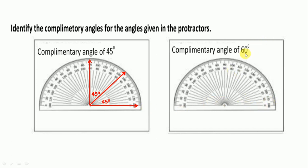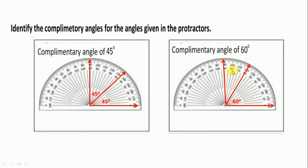Next, 60 degrees is given. First we draw a line to 0 and then to 90 degrees. We draw the 60 degree angle — 60 is here. Its complementary is 10, 20, 30 — so the complementary angle of 60 degrees is 30 degrees.